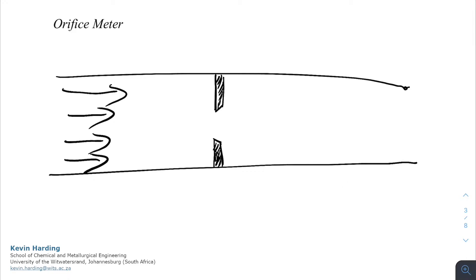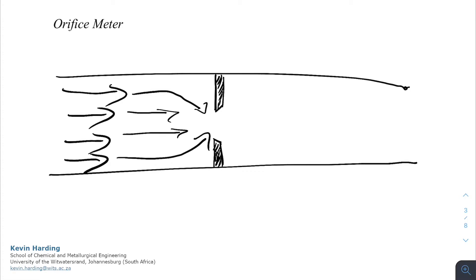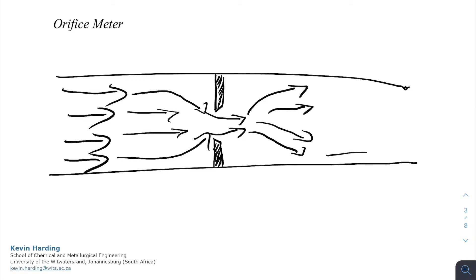As the fluid comes towards the orifice meter it gets restricted, and the flow pattern gets constricted to a narrower point just after the orifice meter. It then expands again and returns to its normal flow pattern some distance further down the pipe.